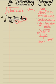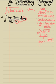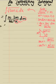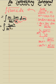Therefore sec²x equals m⁴ + 1. Now we have a value for sec²x in terms of m, which is exactly what we wanted. Substituting this in, the integral becomes 2m² over (m⁴ + 1) dm.